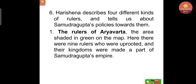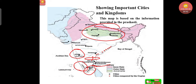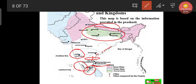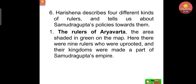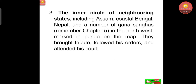The second kind: the rulers of Dakshinapatha. There were 12 rulers, some of whose capitals are marked with red dots on the map. They surrendered to Samudragupta after being defeated, and he then allowed them to rule again. The third kind: the inner circle of neighboring states, including Assam, coastal Bengal, Nepal, and a number of Gana Sanghas.